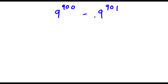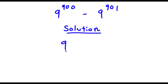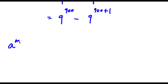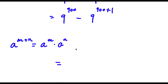So I have 9 to the power of 900 minus 9 to the power of 901. First, 901 is the same thing as 900 plus 1, so I have 9 to the power of 900 minus 9 to the power of (900 plus 1). Now, using the rule a^(m+n) = a^m × a^n, 9 to the power of (900 plus 1) equals 9 to the power of 900 times 9 to the power of 1.